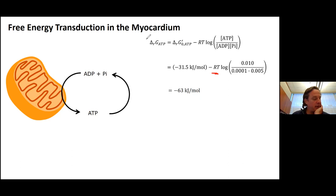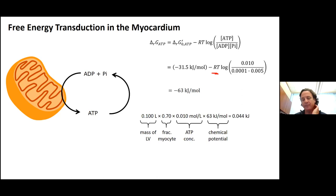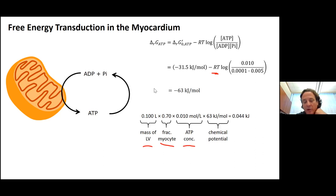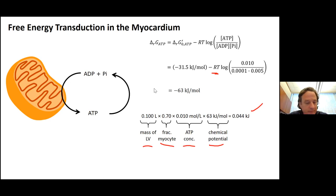We can convert energy density to total energy by thinking about the mass of the left ventricle. An adult human left ventricle is about 100 milliliters, and about 70 percent of that is cardiomyocytes. With an ATP concentration of about 10 millimolar, multiplying liters times moles per liter gives moles, and multiplying by kilojoules per mole gives us 44 joules.